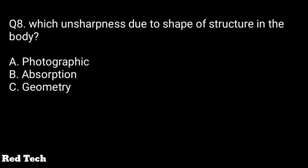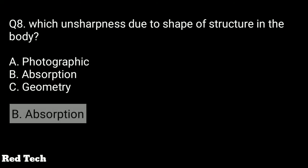Question number eight: which unsharpness is due to the shape of structures in the body? The options are photographic, absorption, or geometry. The right answer is absorption unsharpness, which is mainly due to the shape of structures in the body.